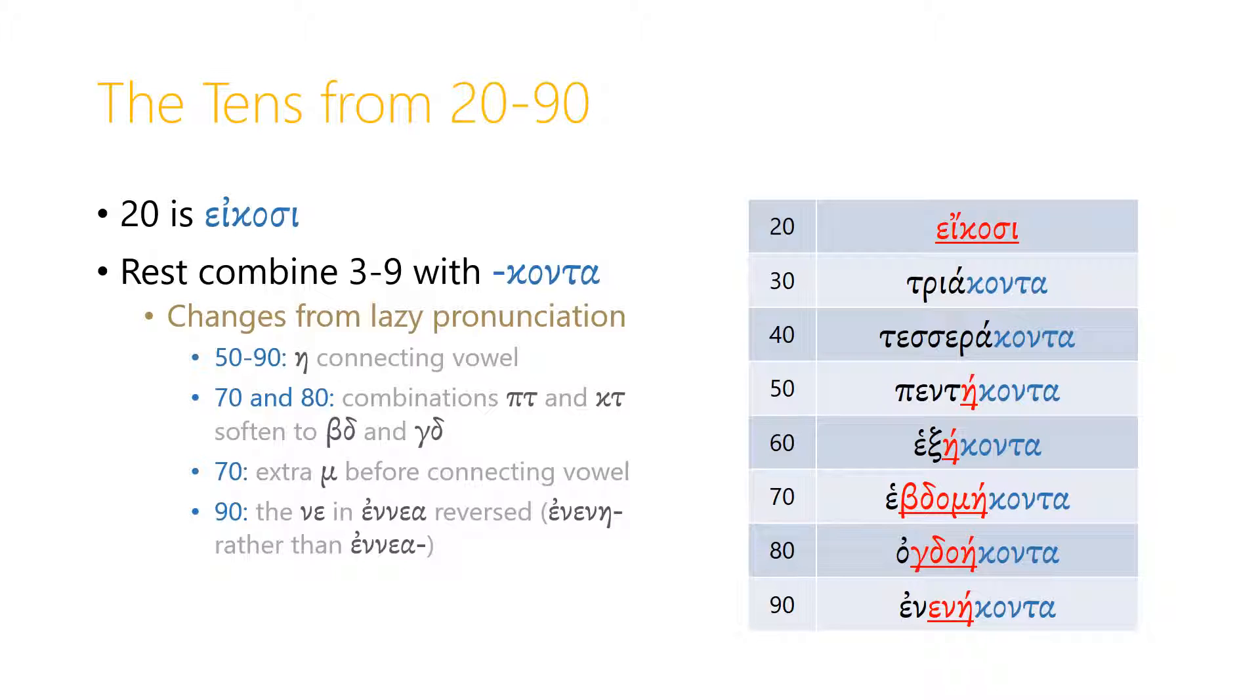In 70 and 80, the combinations p-tau and kappa-tau are softened to beta-delta from p-tau and gamma-delta from kappa-tau. So instead of heptomaconta, we have hebdomaconta. And instead of octoaconta, we have ogdoaconta. Notice too, in 70, we have an extra mu before the connecting vowel. Why? Again, probably because it was a little bit easier to pronounce. So it's not heptoaconta, it's hebdomaconta.